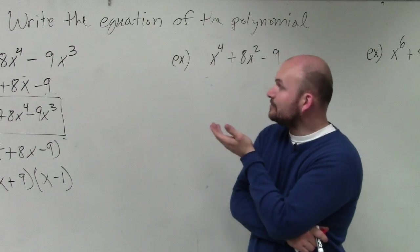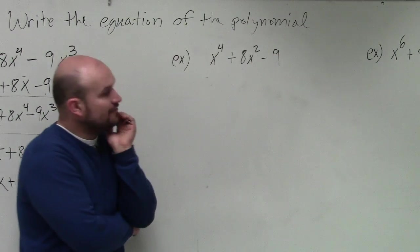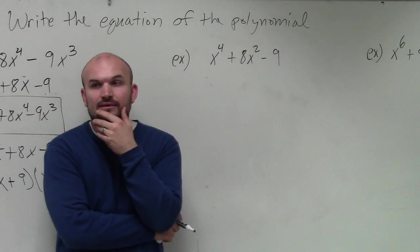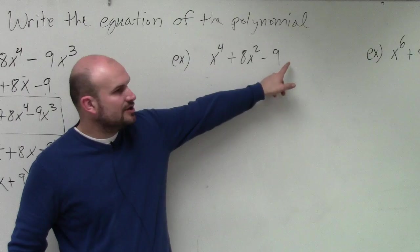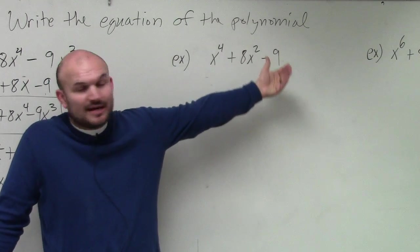But now, if we look at this next problem, we have x to the fourth plus 8x squared minus 9. Well now, ladies and gentlemen, we don't have an x to factor out because there's no x with a 9, right? So we can't factor it out.